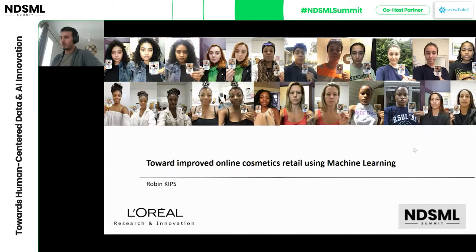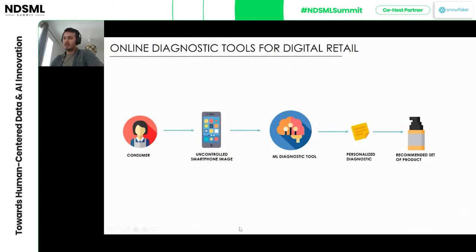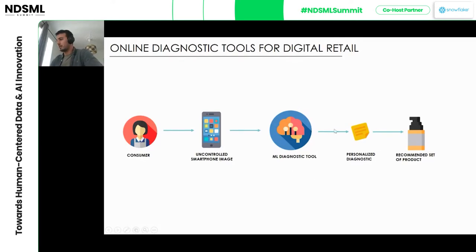The general idea I'm going to talk about today is what we call online diagnostic tools. They are mainly interesting in the case of digital retail because they manage to enhance, mimic, or replace the consumer experience you can have in a physical shop. The idea is that when a consumer goes on the website, we get a smartphone image from them, and out of this image I run a set of diagnostic tools based on machine learning.